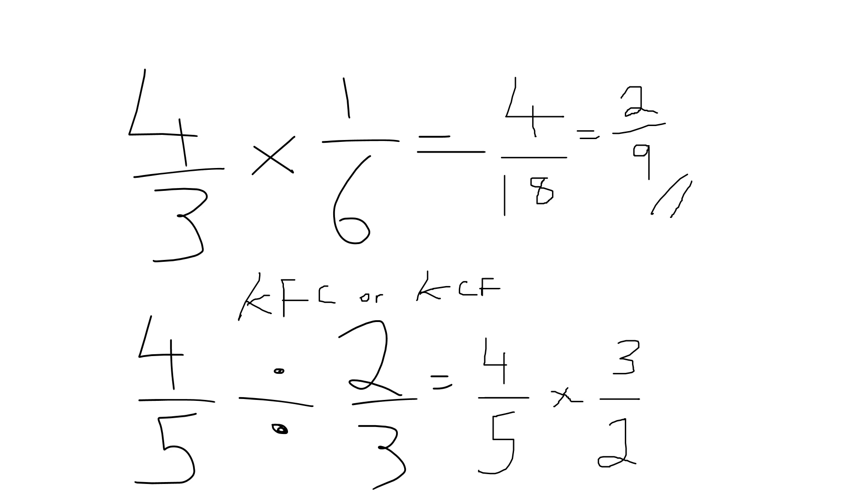Now multiply fractions, multiply top by top, bottom by bottom, and then simplify if needed. Four times three is 12, five times two is 10. I get the answer 12 tenths. They're both even, so I can divide top and bottom by two, and I get six fifths or six over five.